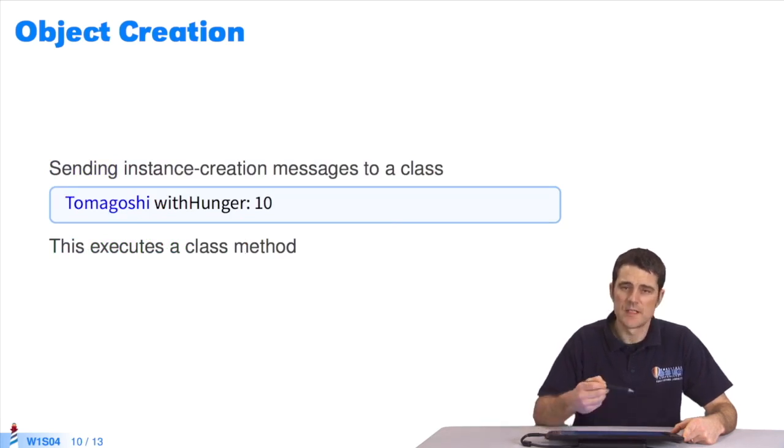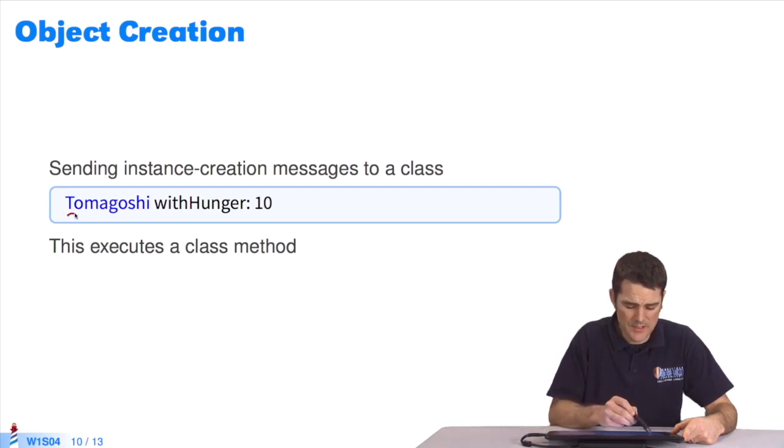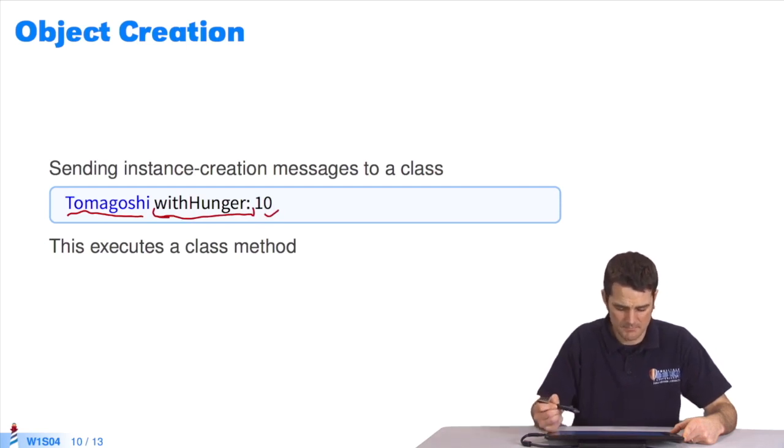We can have dedicated messages to create objects, and I can define my own messages to a class. I could create a class tamagotchi with a method with hunger. And for this method, I'll give the integer 10. This creates an instance of the class tamagotchi by attributing a parameter. So these are specialized messages for object creation.